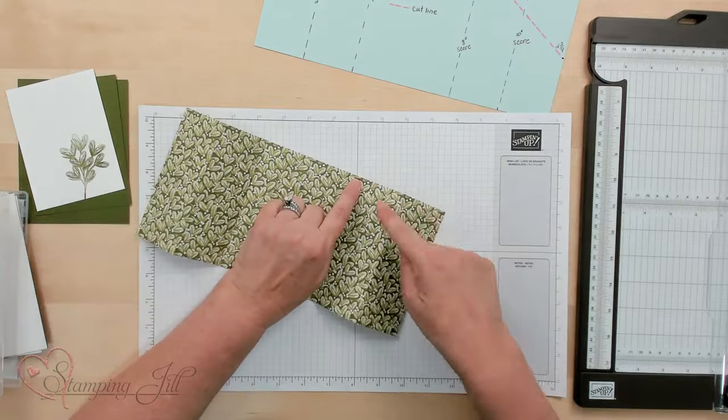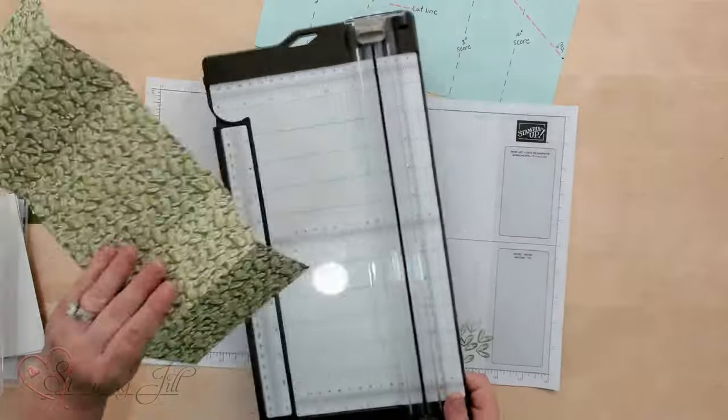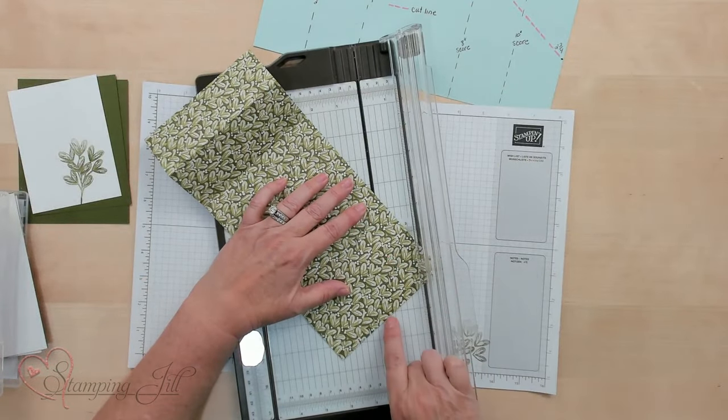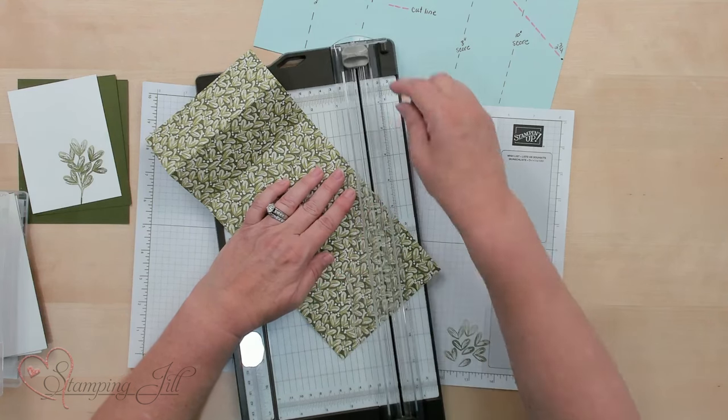Now the next thing I'm going to do is trim this at a diagonal to that 2 3/4 mark and it's going to be right from that little spot to the second score mark.